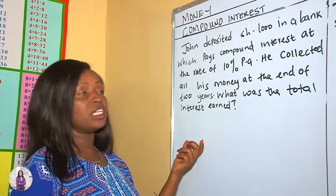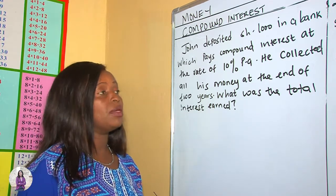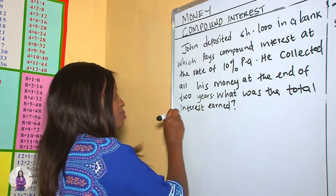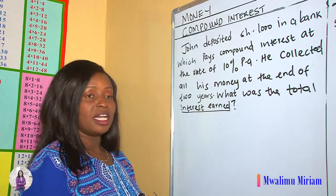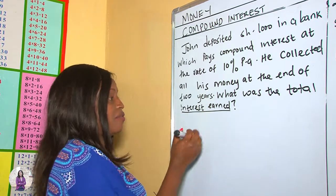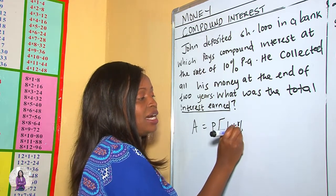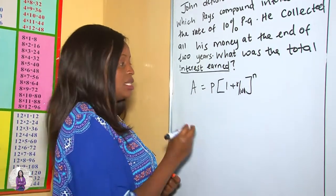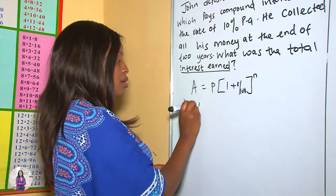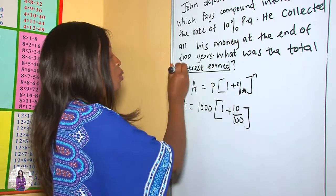In our third example, John deposited 1,000 shillings in a bank which pays compound interest at a rate of 10% per annum. He collected all his money at the end of two years. What was the interest? Our formula gives us the amount, and we know how to get compound interest from the amount. Amount = Principal × (1 + Rate/100)^n. Here, principal = 1,000, rate = 10%, and n = 2 years.